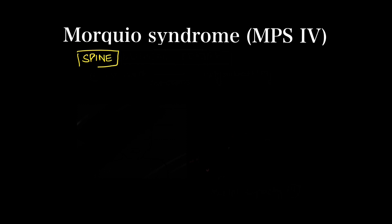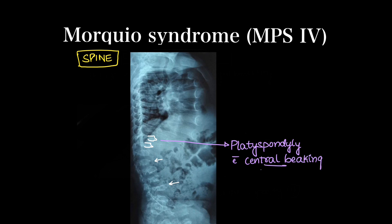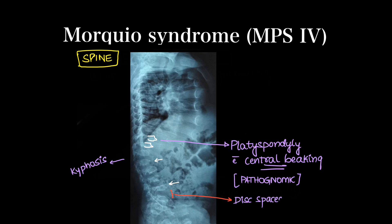One of the most important X-rays is the dorsolumbar spine. Morquio will show platyspondyly — flattened vertebral bodies — whereas in Hurler's we had oval-shaped or bulbous vertebrae. Here we have central beaking, not antero-inferior beaking. Kyphoscoliotic defects can be present. Always observe the disc spaces — they are either normal or increased. In spondyloepiphyseal dysplasia, there will be decreased disc spaces, which helps differentiate.